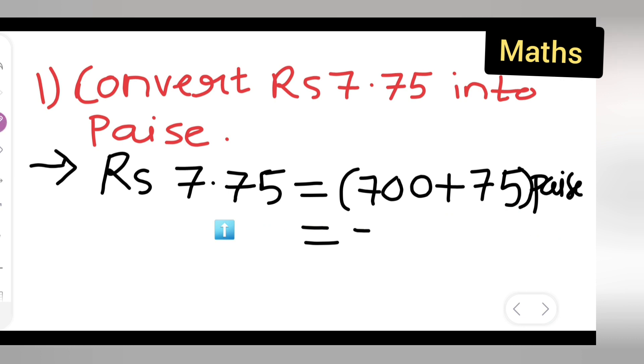Then what is your answer? 775 Paise is your answer. So I hope you have understood how to convert Rs. 7.75 into Paise. Thanks for watching.